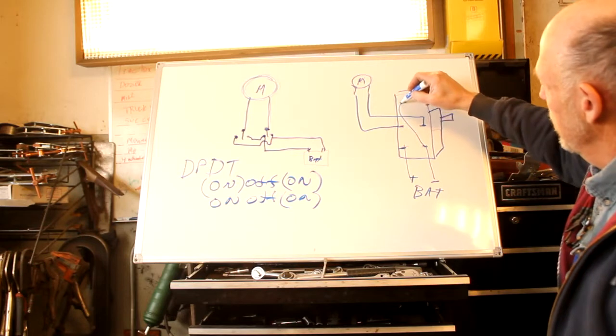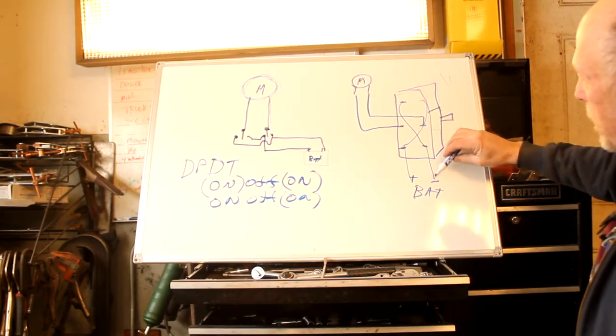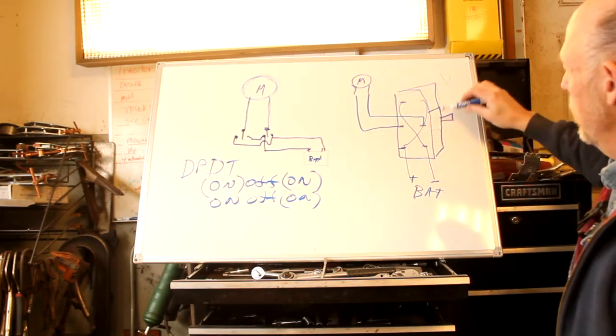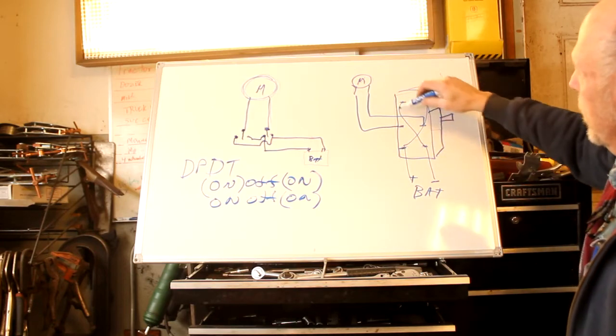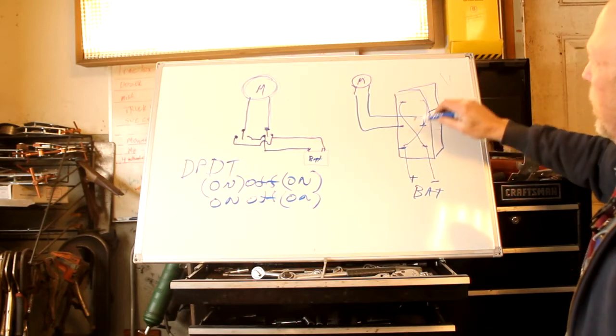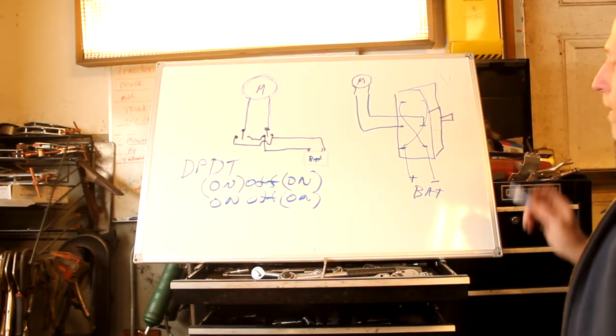And then the other side is just a crossover. This now goes over to this side. This now goes over to this side. So when you're in one direction the plus and minus add directly to the output that goes to the motor. When you switch the other way the current crosses so that now this one is going to the opposite side over here and this one's going to the opposite side over there, and therefore it reverses.